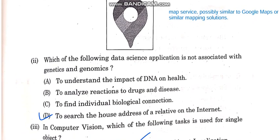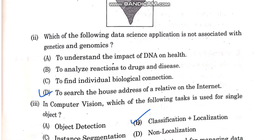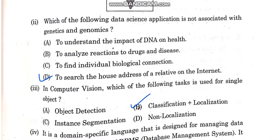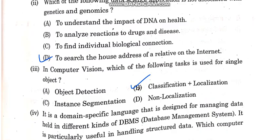Which of the following data science applications is not associated with genetics? The correct answer is the option: to search the house address of a relative on the internet.